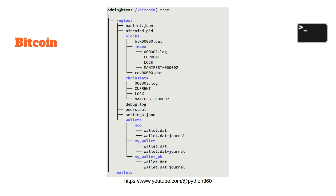I ran the 'tree' command from my Bitcoin directory and you can see the regtest folder. It contains ban list, blocks, chain state, and wallets. Wallets is the important bit, especially if you ever want to back up or delete a wallet. Be careful — I've shown this so you know what's going on under the bonnet.